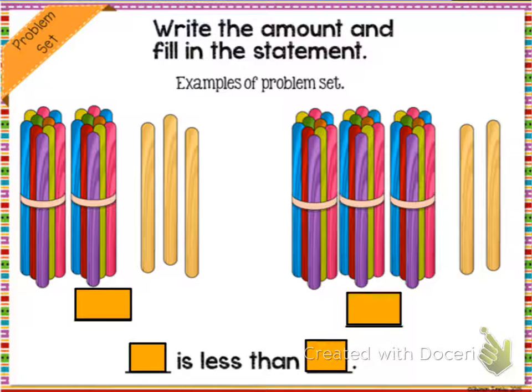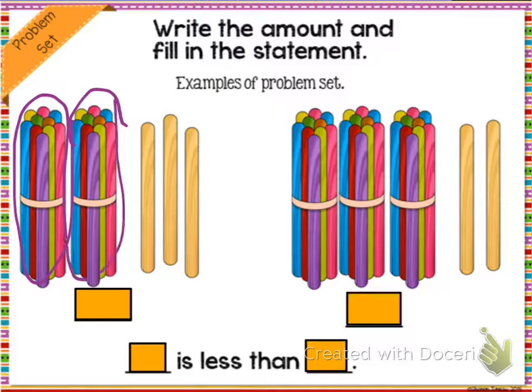Now, looking at this next one, we have the same thing. We have two pictures, and we have to figure out what number each picture is showing. Then we have to finish this statement at the bottom. So first, we're going to look that we have two 10s in this first picture, and 1, 2, 3 ones. So now I'm going to count it: 10, 20, 21, 22, 23. So this picture is showing 23.